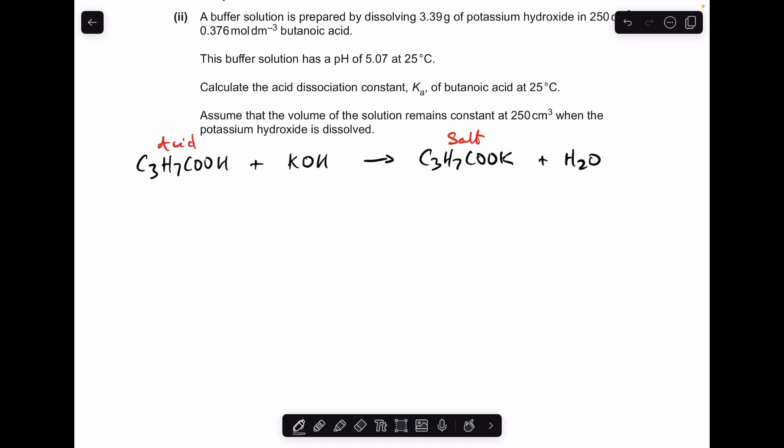So the first thing we need to do is calculate the moles of the reactants that we've got. Starting with the acid, we've got the concentration and volume of the acid so we multiply them together. Just make sure your volumes in decimeters cubed. So the initial moles are 0.094.